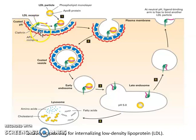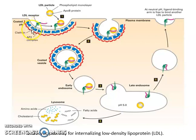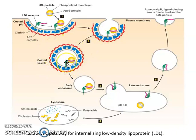After binding, clathrin and AP2 coat proteins — which are coat proteins — will form a vesicle that ultimately transports the LDL particle. The receptor interacts with the AP2 coat protein, and then the portion of the plasma membrane invaginates. Gradually, a coated vesicle forms, taking the LDL receptor and LDL particle inside.